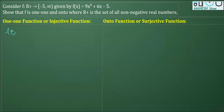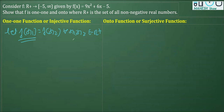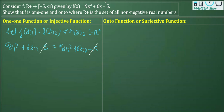To prove one-one, let f(x₁) = f(x₂), where x₁ and x₂ belong to ℝ⁺. Replacing in the function, f(x₁) gives 9x₁² + 6x₁ - 5, and that is equal to 9x₂² + 6x₂ - 5. The minus five cancels from both sides, and keeping like terms together, we transpose 9x₂² and 6x₂ to the left, giving us zero.